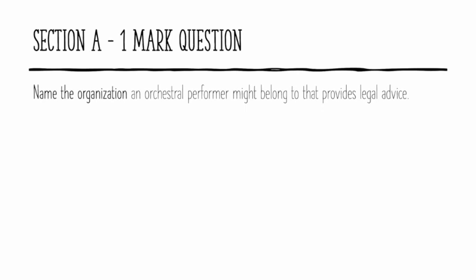When you're in your exam going through the one mark questions, you need to make sure you're reading them really carefully because it can be easy when you're quite nervous to miss little bits of information. So in this question, it wants the name of an organisation an orchestral performer might belong to that provides legal advice. The answer would be the Musicians Union, who are there to give you legal advice, help you get insurance for your instruments, and help you copyright songs.